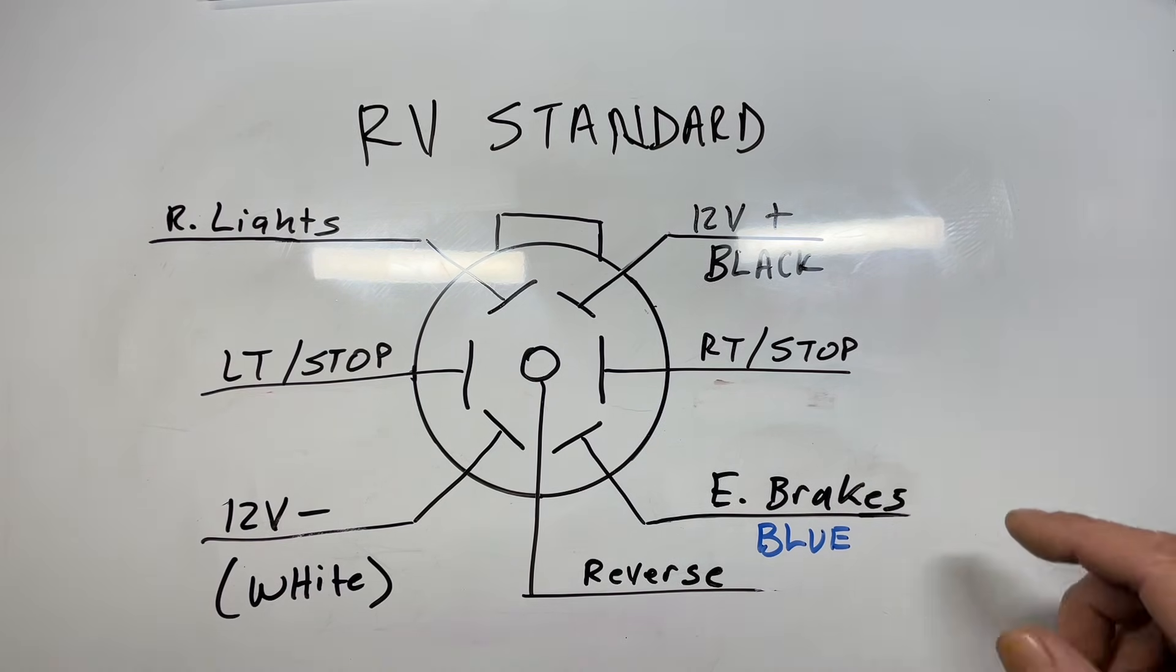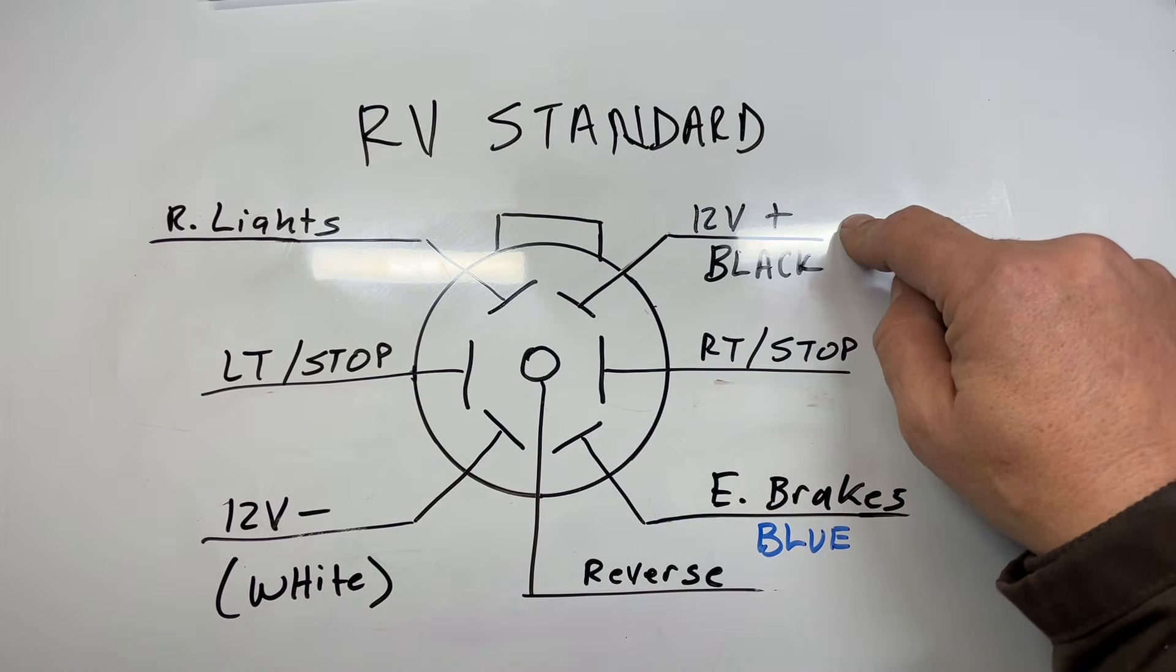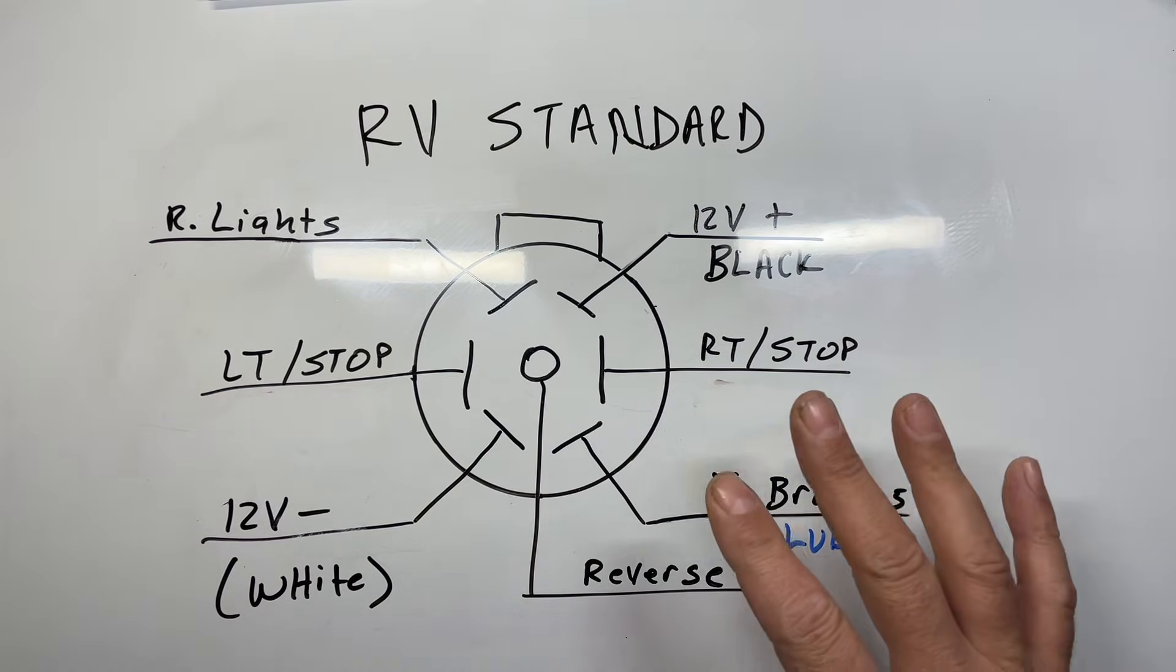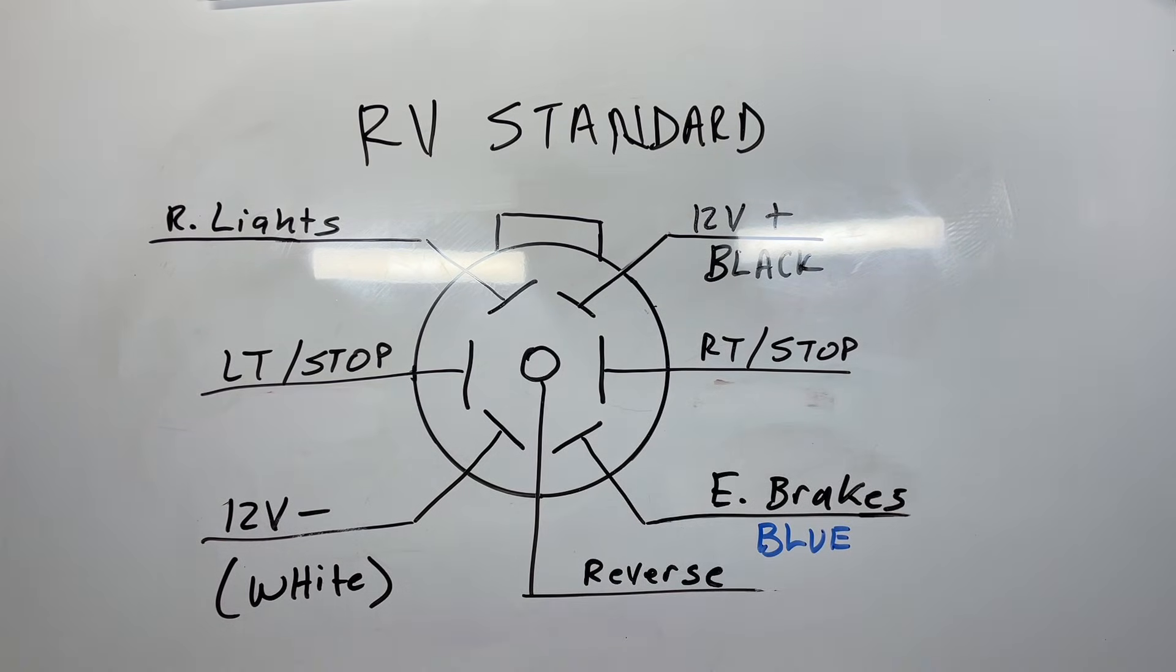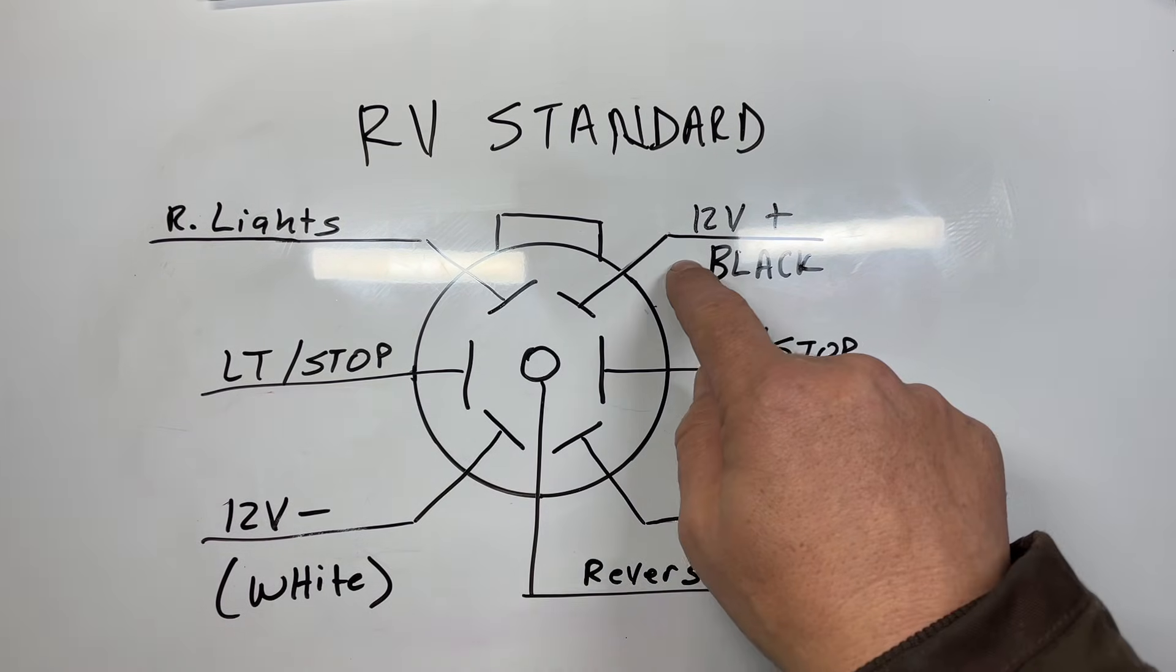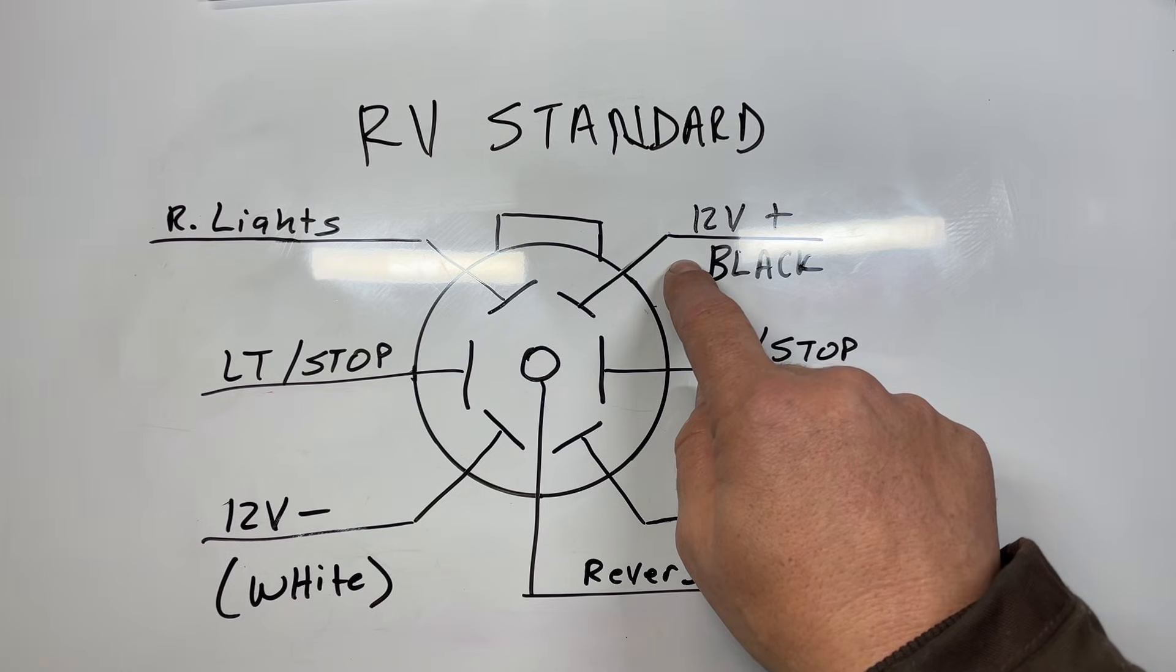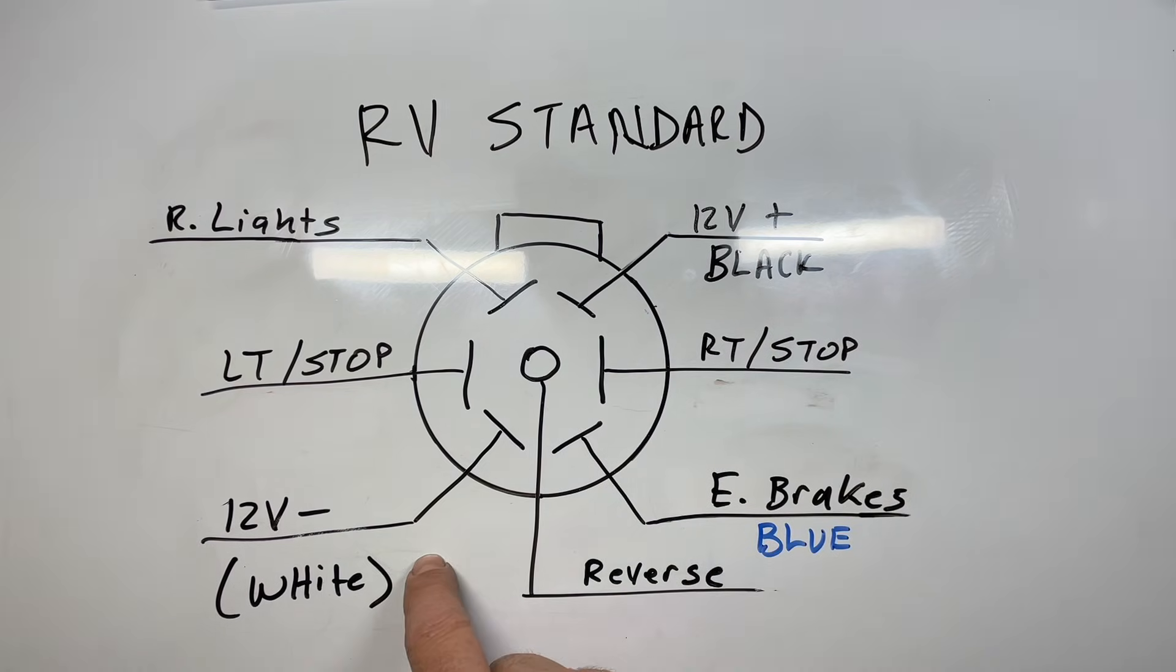For the RV standard, some of those colors are going to change. The good thing about the RV standard and the SAE standard is the positions still retain the same functions. We're going to have 12-volt positive on our first position in black, 12-volt negative directly opposite that in white.